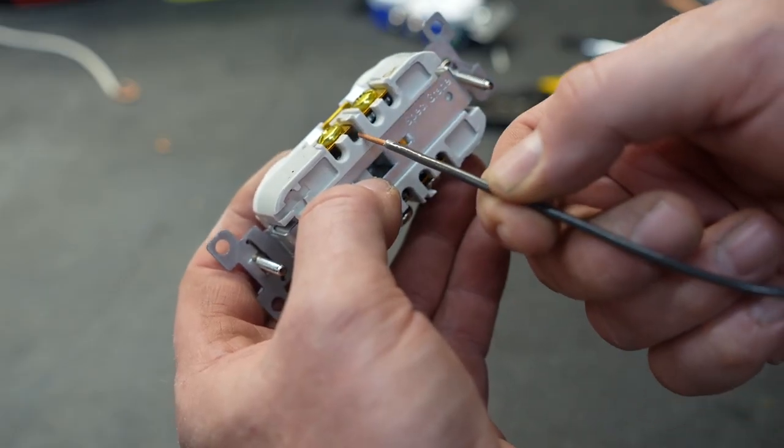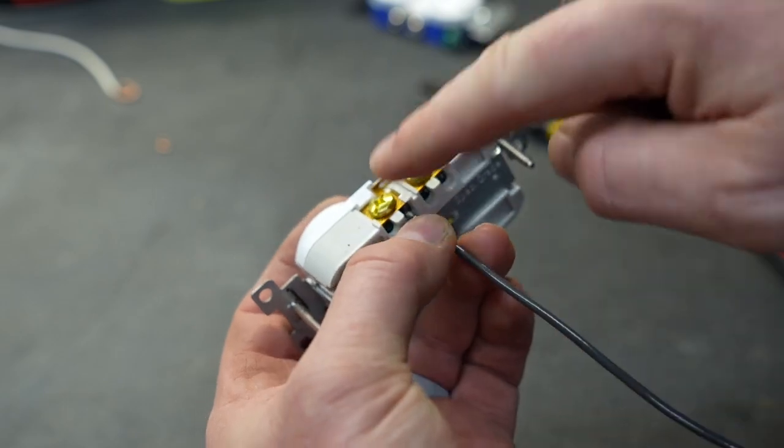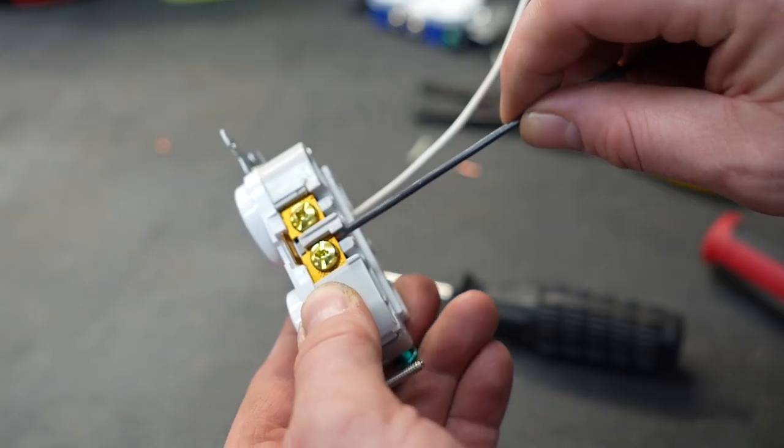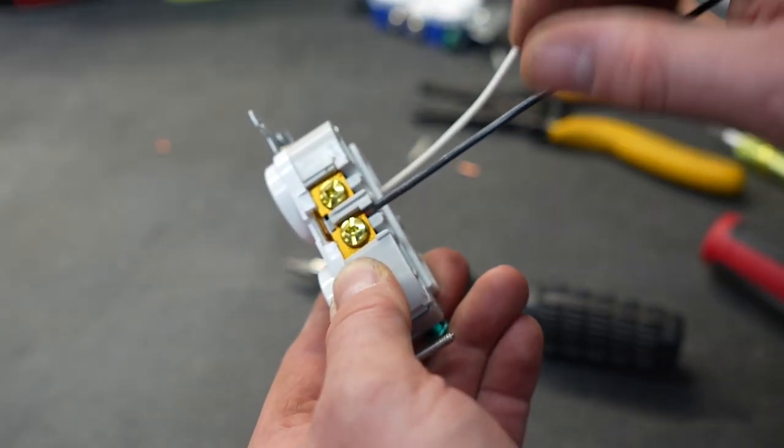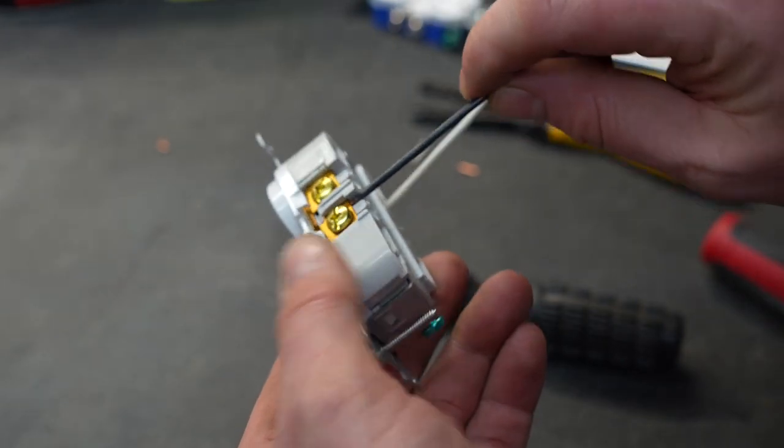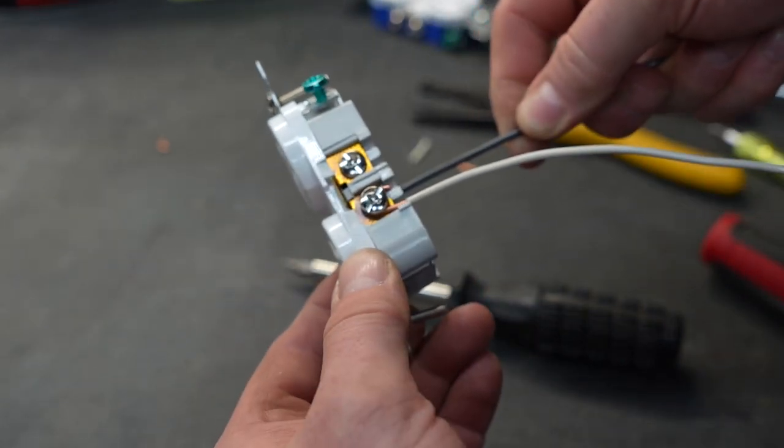You don't have to put a loop in the wire. You can just shove it into the back of the outlet and tighten the terminal. Once that screw is tight, the wire is not going anywhere. And if you wanted to go to the traditional route and still use the looping technique, you can.